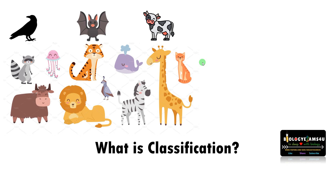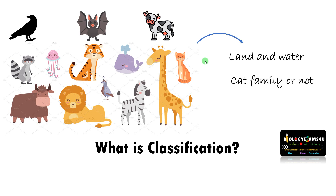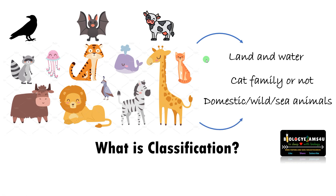This is a list of animals. Let us classify these animals — I'll be giving you 10 seconds. You may be classifying: some are on land, some are on water, or maybe some belong to the cat family — lion, tiger, and cat. Others are not, or maybe some are domestic, wild, and sea animals.